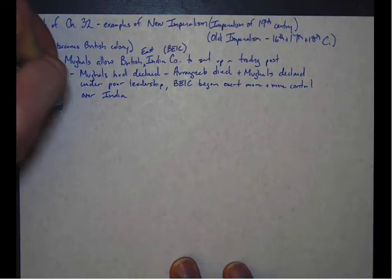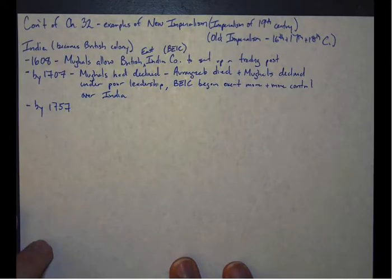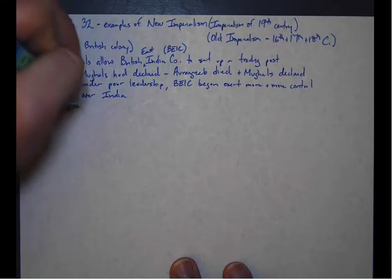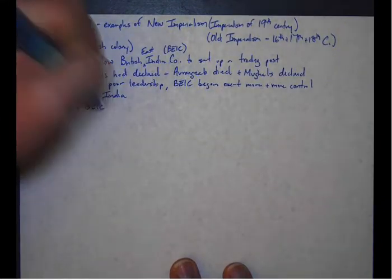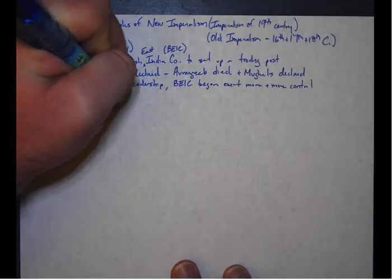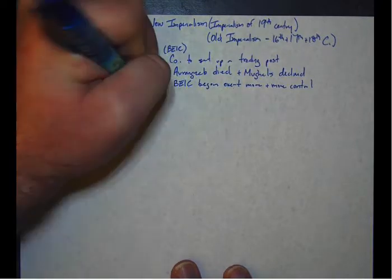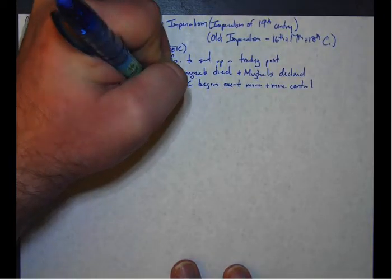By 1757, so 50 years after this, the British East India Company defeated the Mughal Empire and took over India.